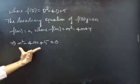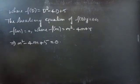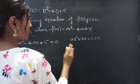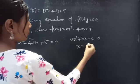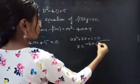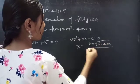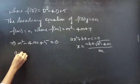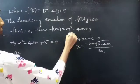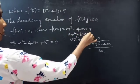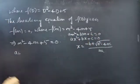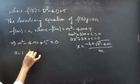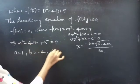Now we need to find roots of this auxiliary equation using the quadratic formula. We know that ax squared plus bx plus c equals to 0 is a quadratic equation, and roots are given by x equals to minus b plus or minus square root of b squared minus 4ac, all divided by 2a. Likewise, here we compare m squared minus 4m plus 5 equals to 0 with the standard form, giving a equals to 1, b equals to minus 4, and c equals to 5.